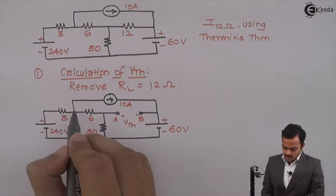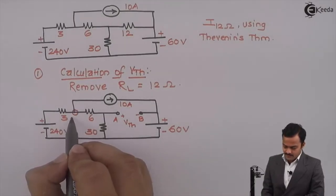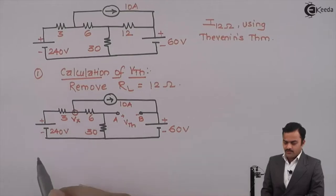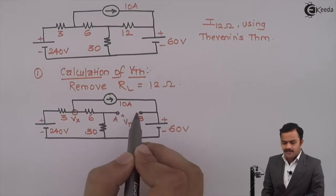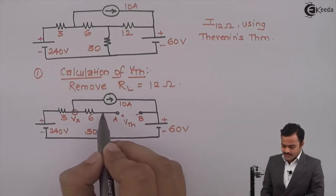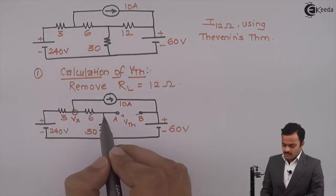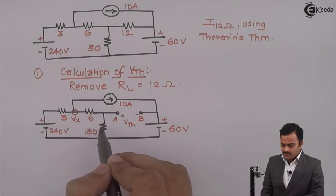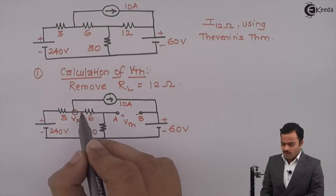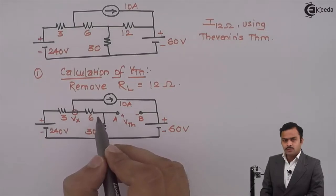This is a node because three branches are connected. I will mark this potential Vx. This cannot be a node because this is not a branch. It is disconnected, it is open circuit. At this point, I am having only two branches connected. But if we see properly, if I remove this point, 6 and 30 will come in series forming one branch only. This cannot be a node.